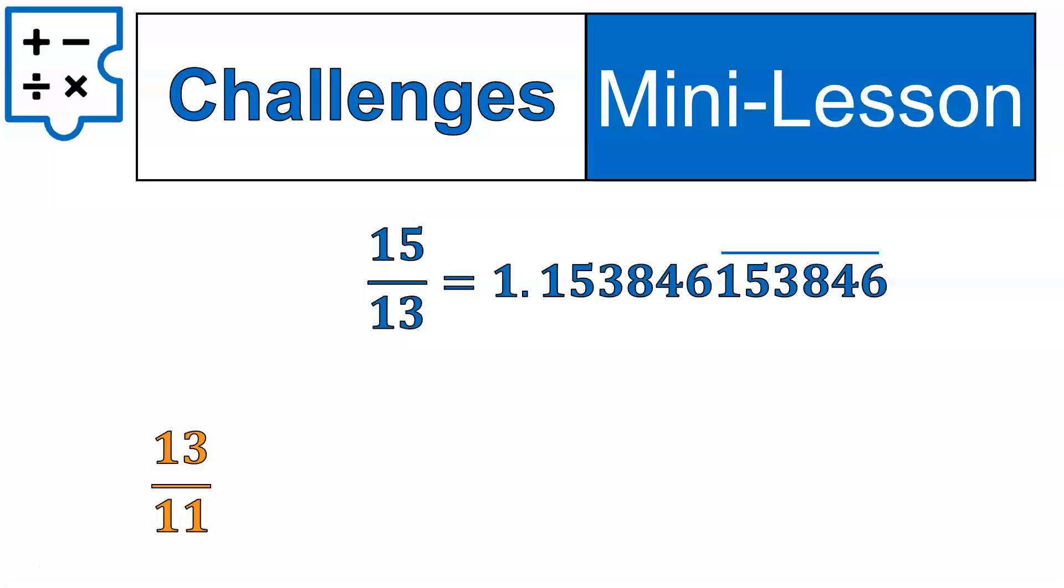Let's do one more. 13 over 11. Try that one out. What did you get? I'm kidding. I can't see what you got. It's a YouTube channel. So here we go. 1.1818, and the 18 is repeating. You don't need to write it out as many times as I did in that example, but as long as the 18 is, there's a line over top of that section, it's absolutely fine.